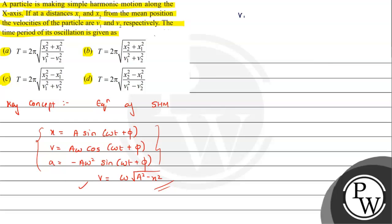So for v1, we can write v1 = ω√(A² - x1²). Because it is one particle, the amplitude will be the same, and the angular frequency will also be the same.